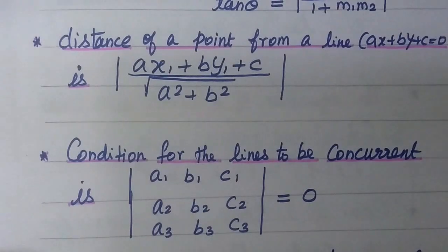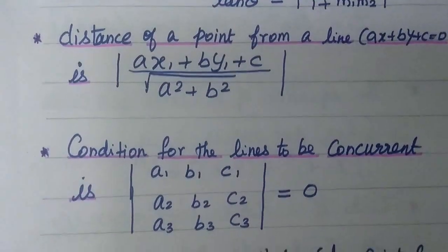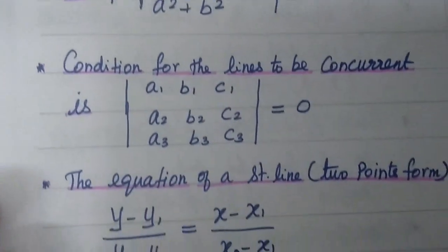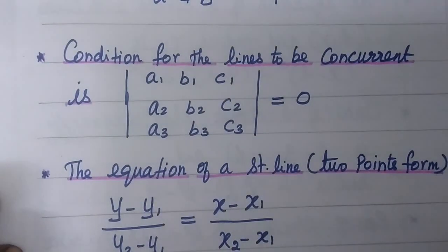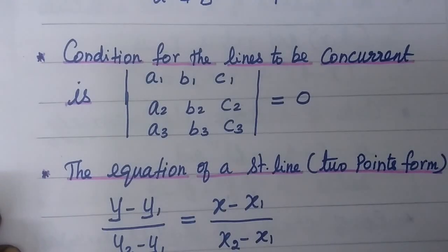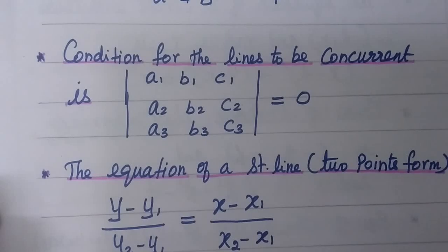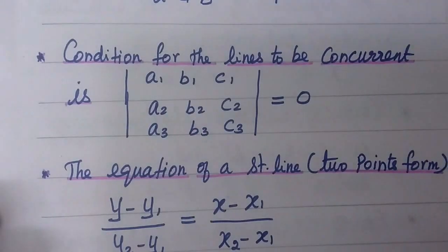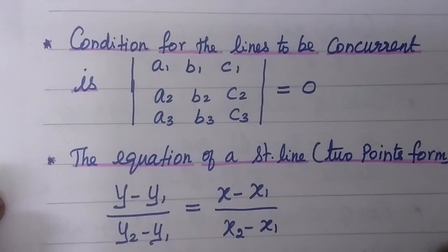The next one is the equation of a straight line in two-point form, which we know already: (y minus y1) divided by (y2 minus y1) equal to (x minus x1) divided by (x2 minus x1).